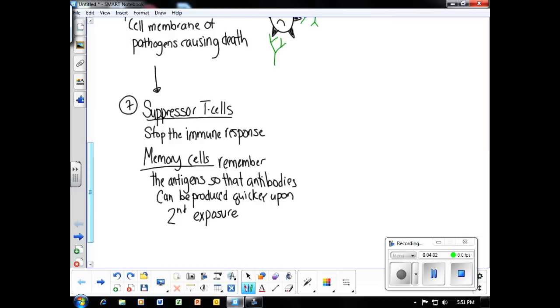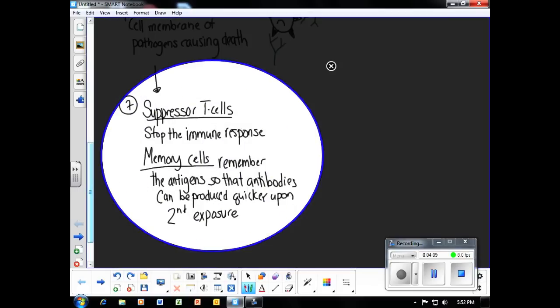The seventh and final step of the immune response involves two different types of white blood cells. The first are suppressor T cells, which stop the immune response so that the body isn't using unnecessary energy. The last one are memory cells. Memory cells are white blood cells that remember the antigen so that next time the invader is encountered, antibodies can be produced much quicker.